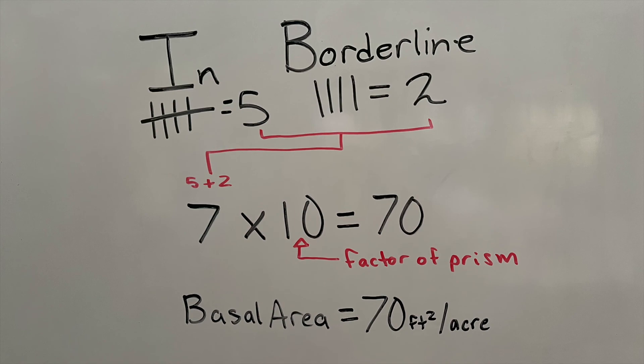In our case, that's 70 feet squared per acre. That is your final basal area for your selected forest plot. Thanks for watching, hopefully this video was helpful for you.